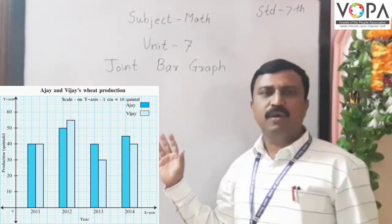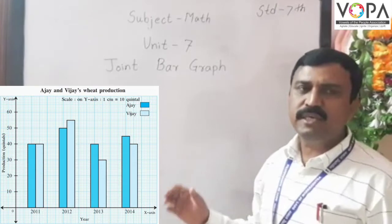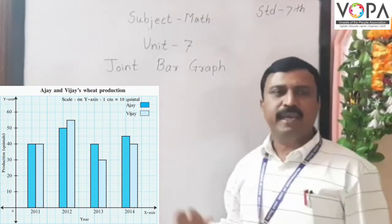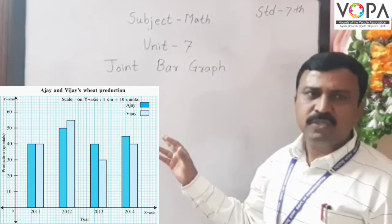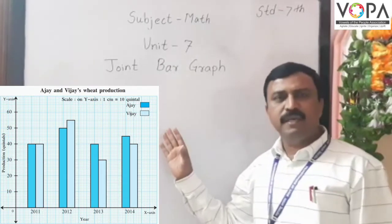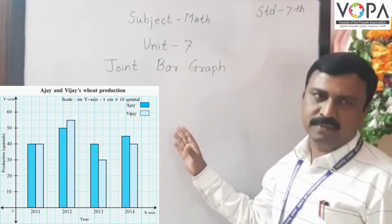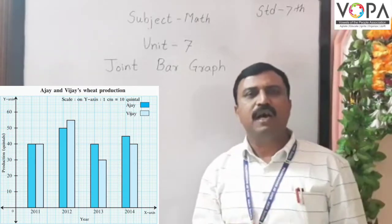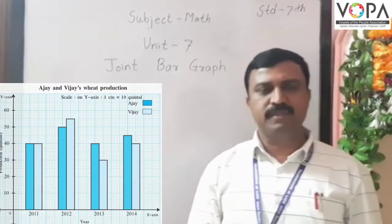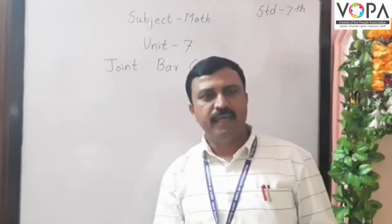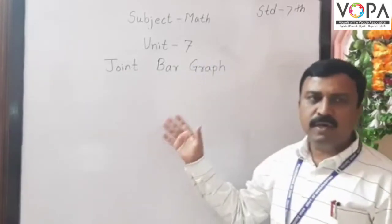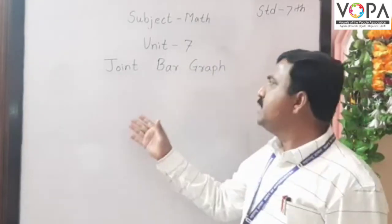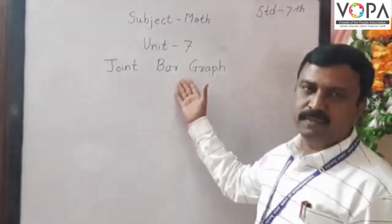By using less space, we can compare so many things by observing joint bar graphs. Such bar graphs are called joint bar graphs. Today we are going to learn how to read and how to draw joint bar graphs.